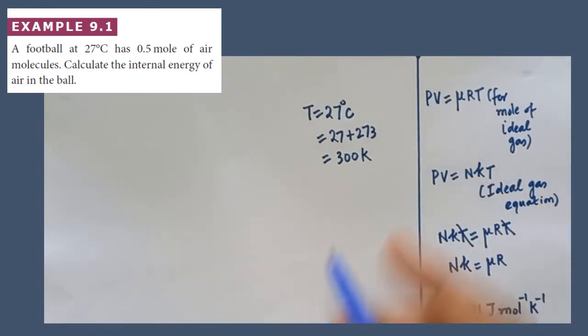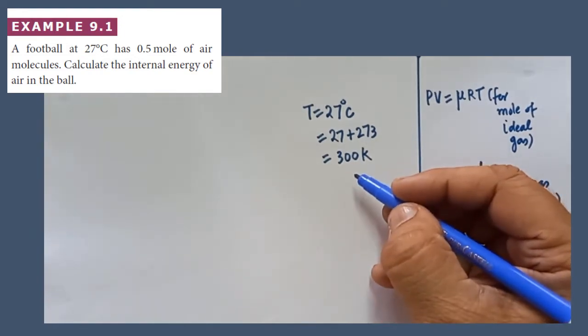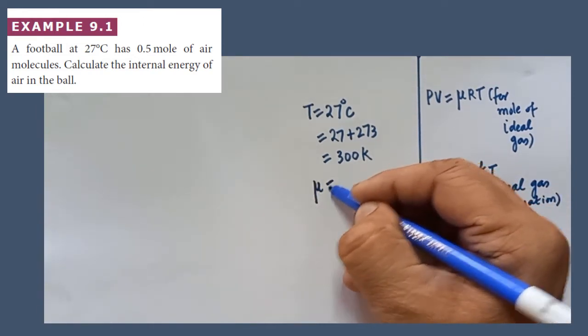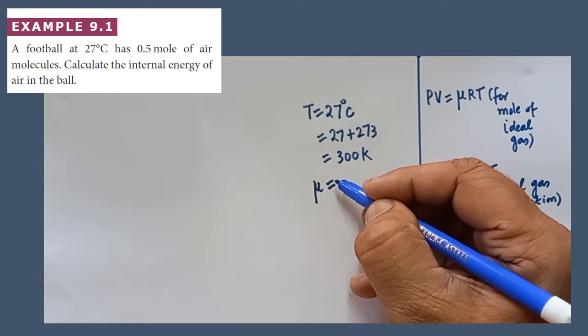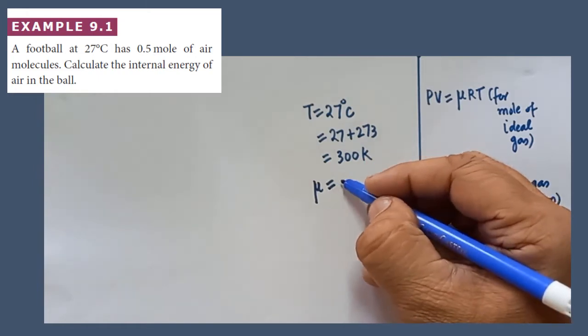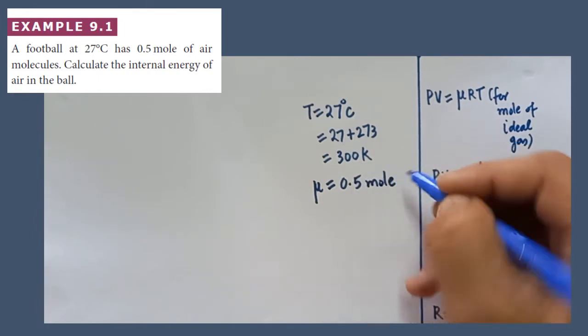So within the football, how much amount of air molecules are present? It is given in terms of mole. So since it is mole, we have to write that symbol μ. It is mentioned here 0.5 mole. So it is given in terms of moles. What is asked? Calculate the internal energy of the air in the ball. Very rare problem.